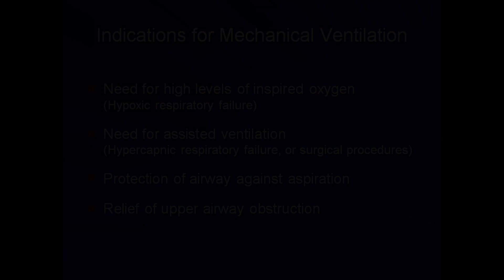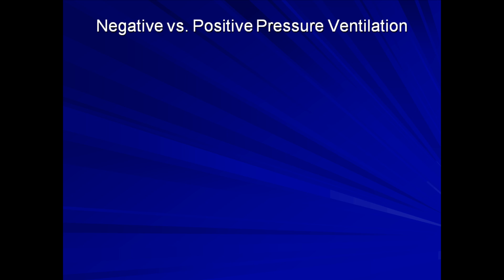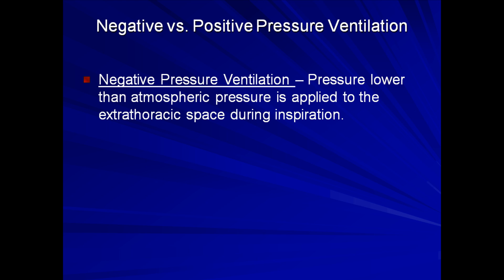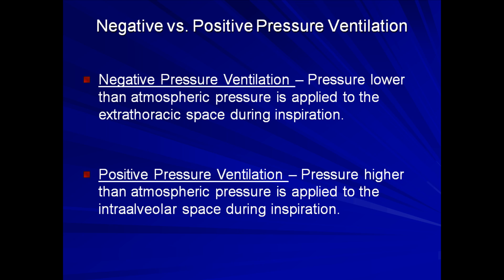On the most fundamental level, the first distinction to make when classifying mechanical ventilation into different categories is whether the ventilator relies on positive or negative pressure to move the chest wall and diaphragm and to create the pressure gradients that drive gas in and out of the lungs. With negative pressure ventilation, which was the first to be developed, pressure lower than atmospheric pressure is applied to the extrathoracic space during inspiration. While with positive pressure ventilation, pressure higher than atmospheric pressure is applied to the intra-alveolar space during inspiration.